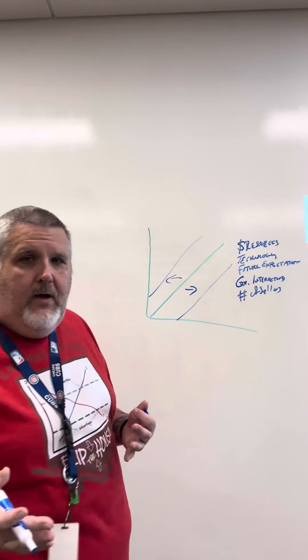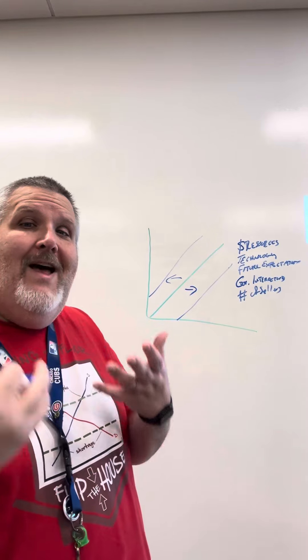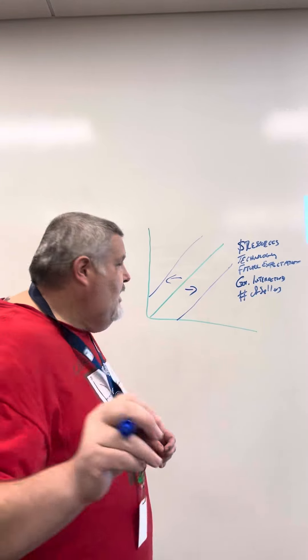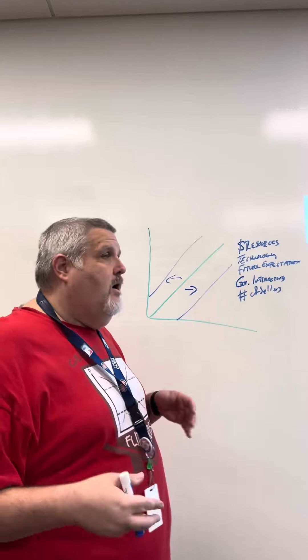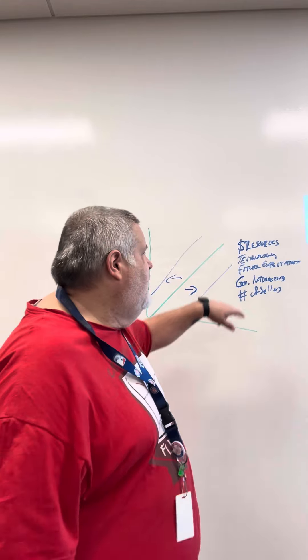What we're looking at here is what's going to happen to the supply in the market. We're not looking at individuals right now, we're looking at the market. So there's five things that are going to shift our supply, just like there's five things that are going to shift our demand. The first is the price of our resources.